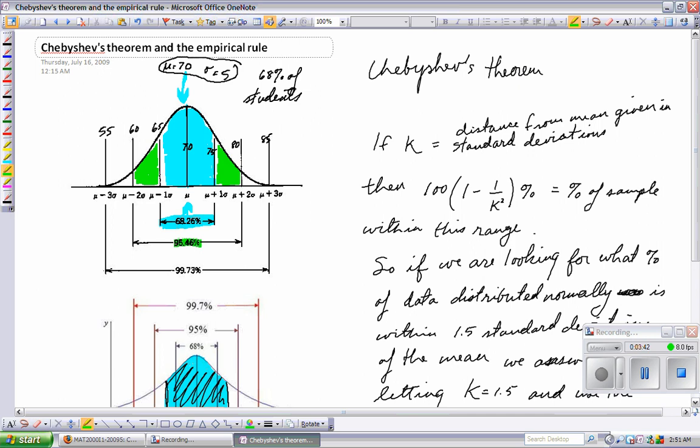So, what does that mean? That means 95.5% of the class scored between a 60 and an 80. Even though I didn't shade in this part, this includes this region includes all that too. So, it's all this.